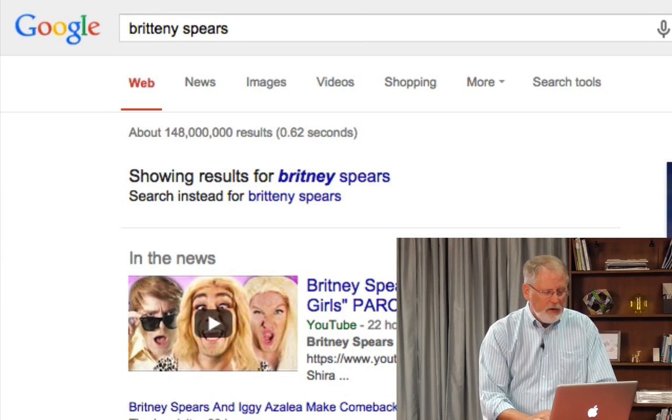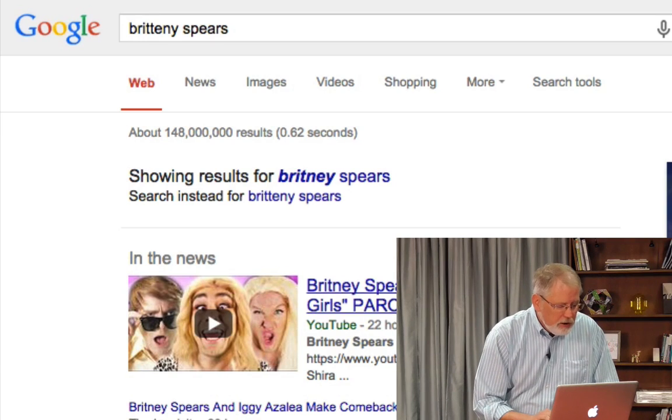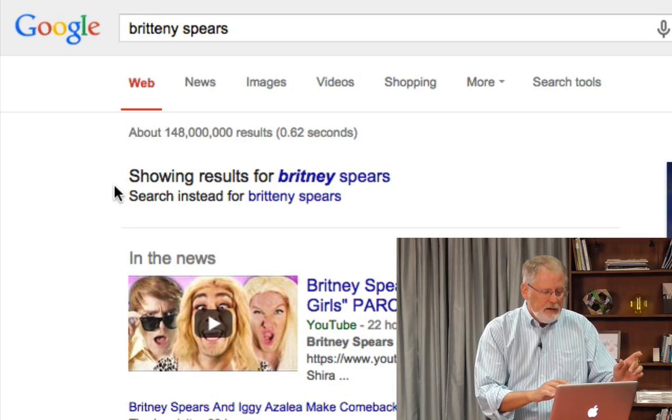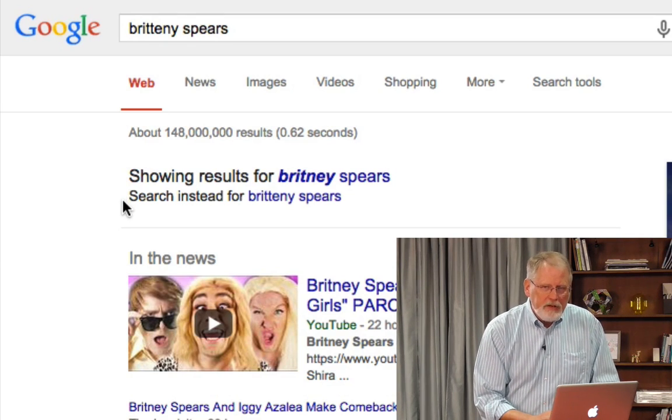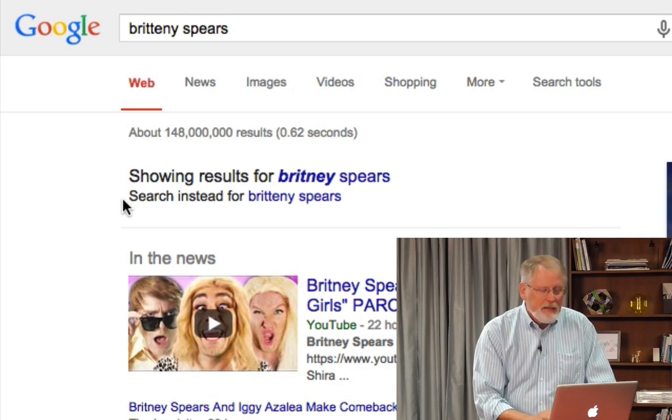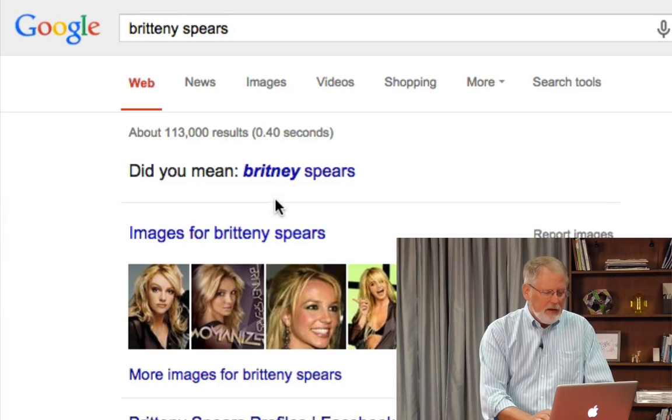And you can see what we've got are a bunch of Britney Spears results. Because if you look up here, we're showing results for Britney Spears with one T. But instead, right below it, you see 'search instead for Britney Spears'. Now, suppose you have a friend who spells her name like that. This is how you can search for it. I'm going to click on the two T version like that.